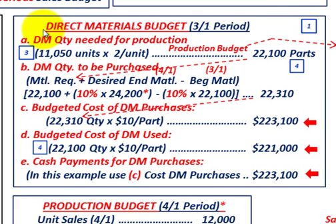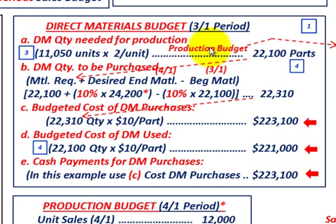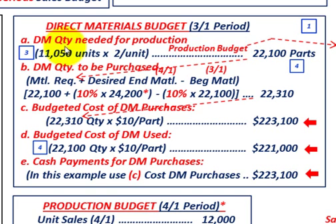Now let's look at the calculations for our direct materials budget for the March period. For step one, we determine the direct material quantity needed for production. The units come from the production budget, which comes from the sales budget. We have 11,050 units to produce times two parts per unit, giving us 22,100 parts needed. Let's look at how we arrived at the 11,050 units from the production budget.